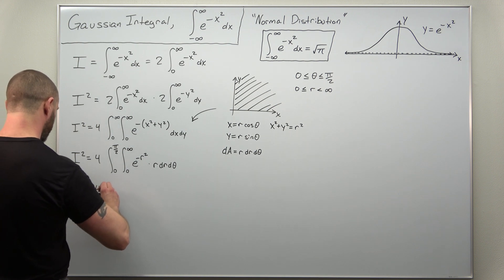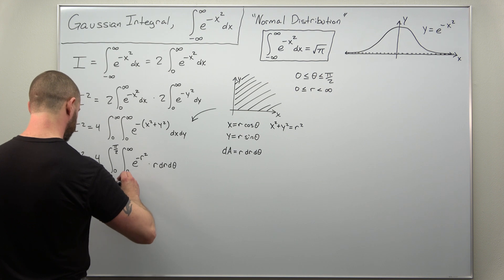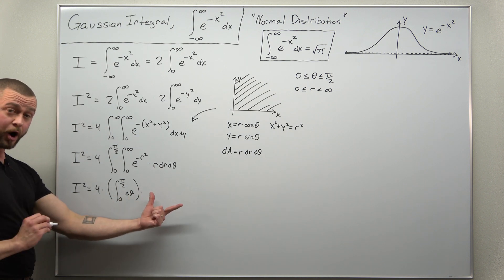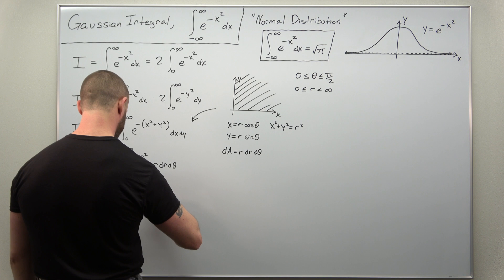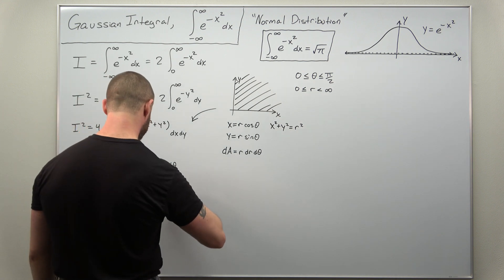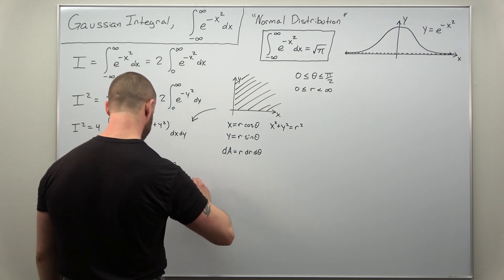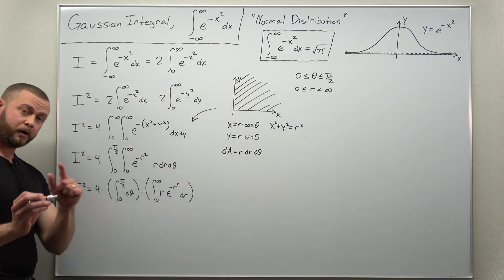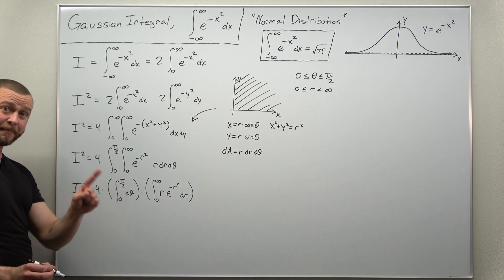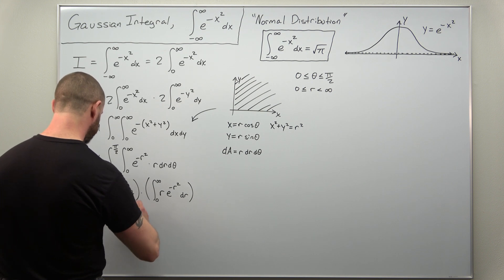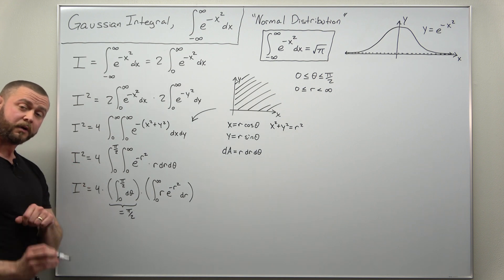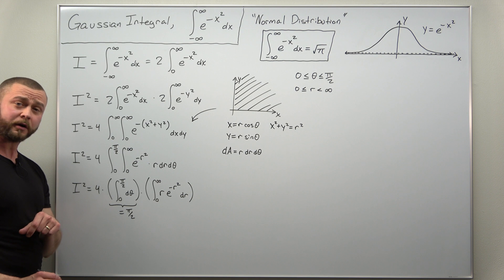We write this as four times the integral from zero to pi over two dθ, times an r integral from zero to infinity of r times e to the negative r squared dr. The theta integral is really simple — the antiderivative is just theta. Evaluating from zero to pi over two gives us pi over two.